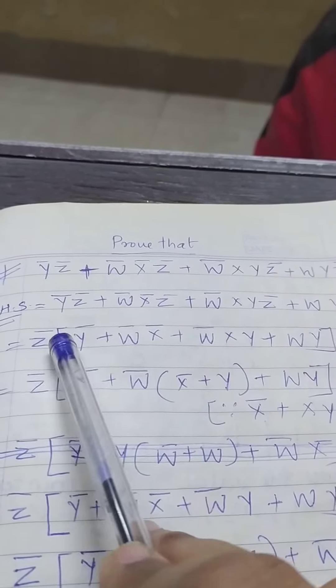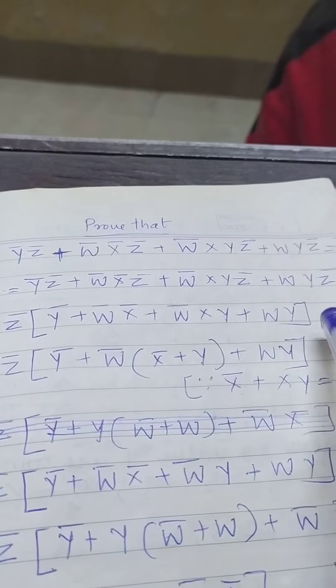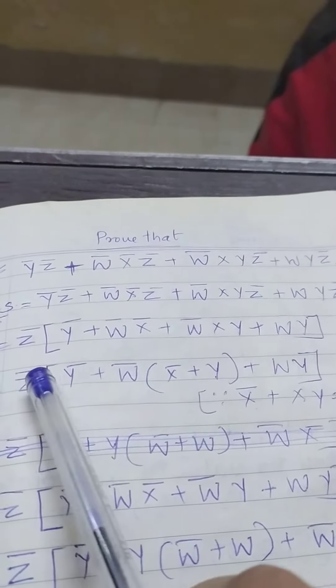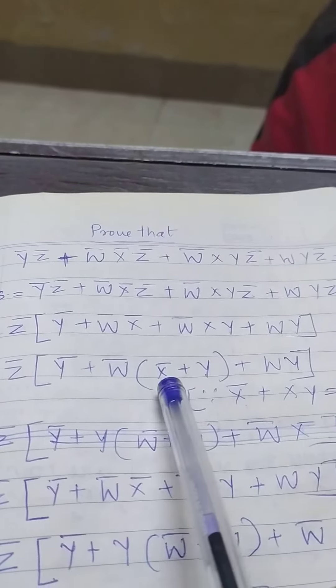Solve the problem by taking z̅ common, y̅. You can see the z̅ is common so you take it as common. Then how will we solve it further?